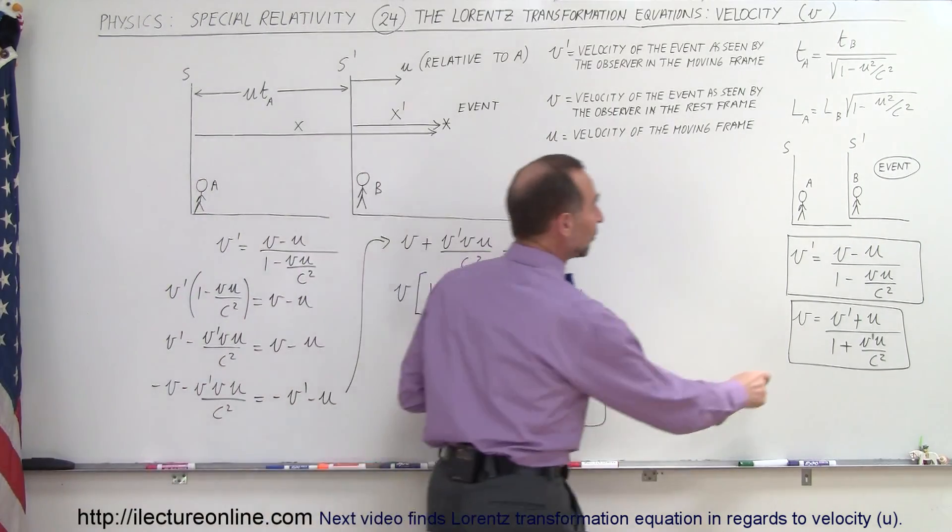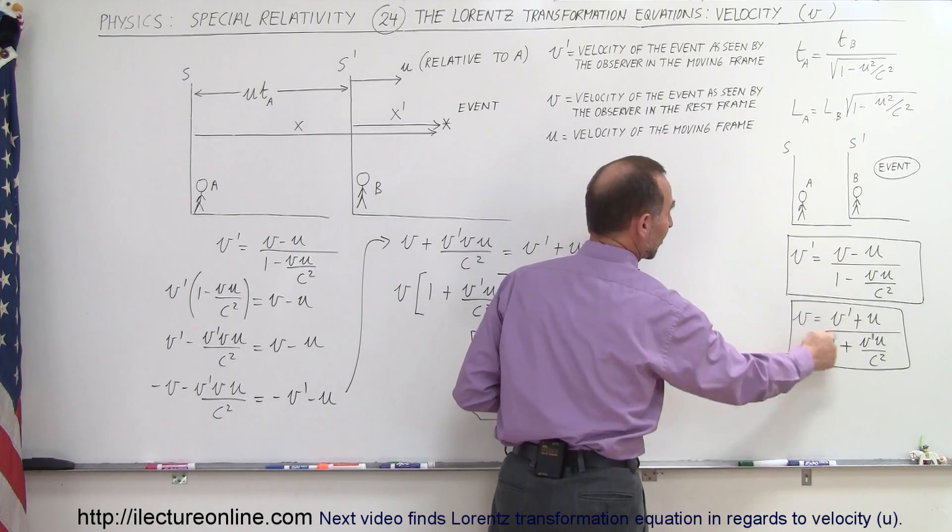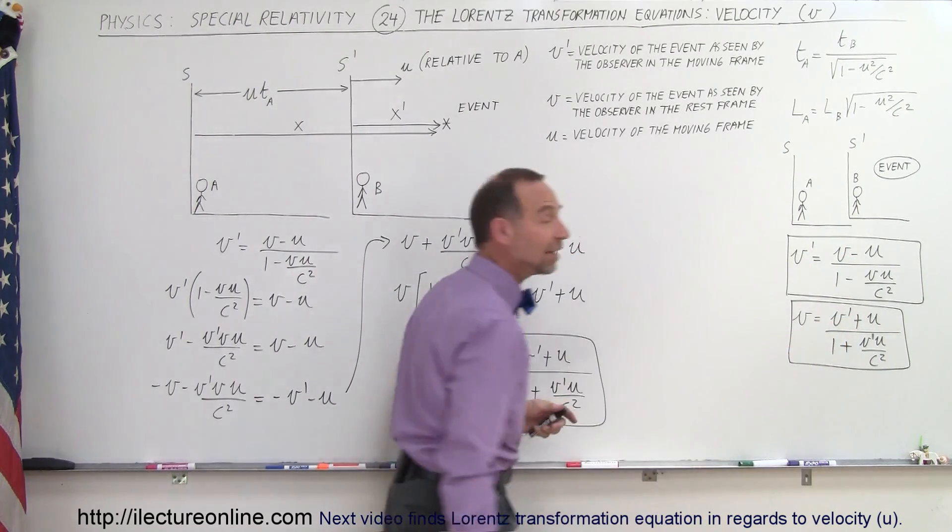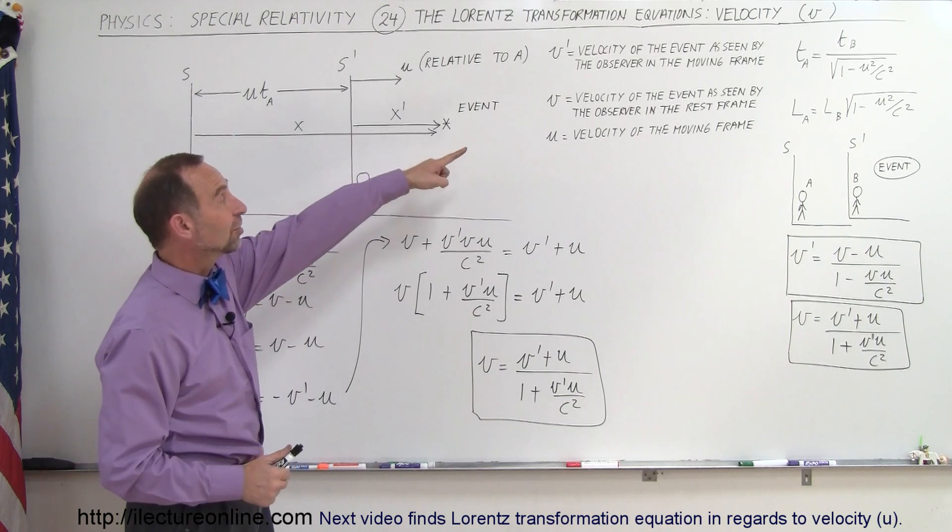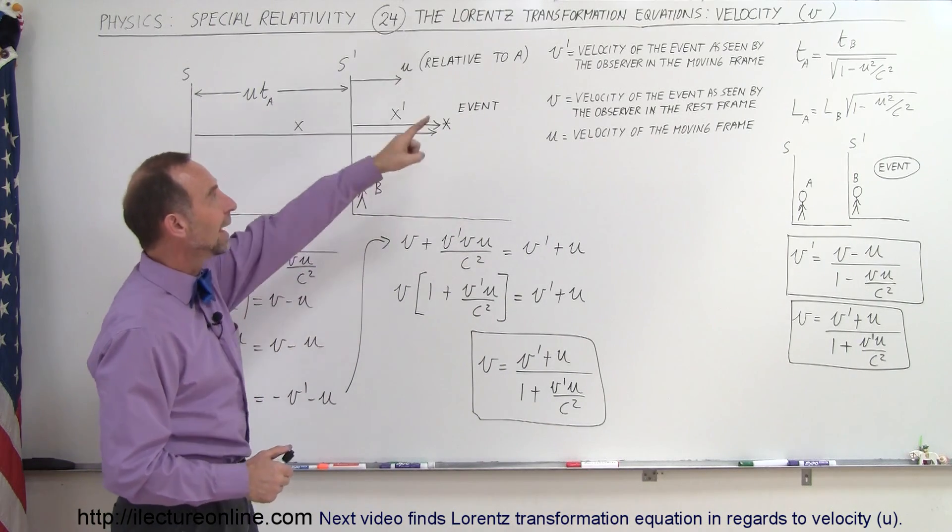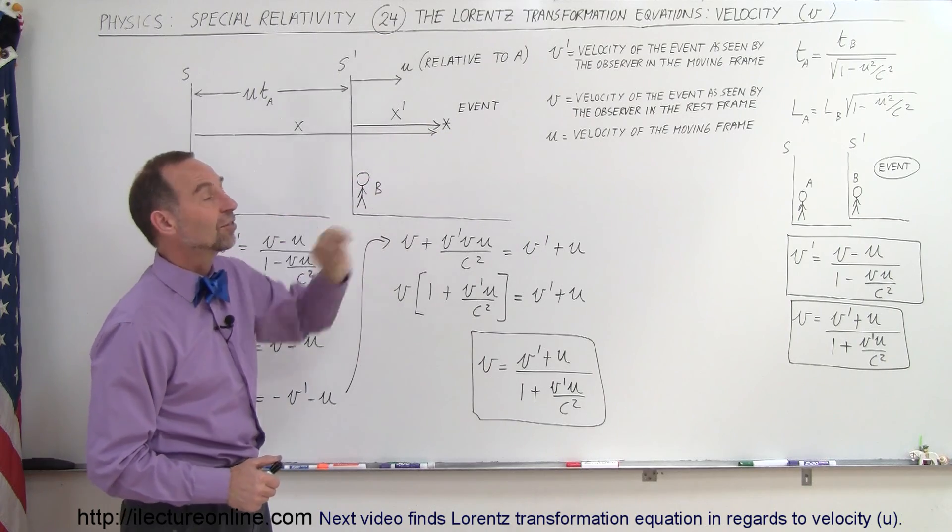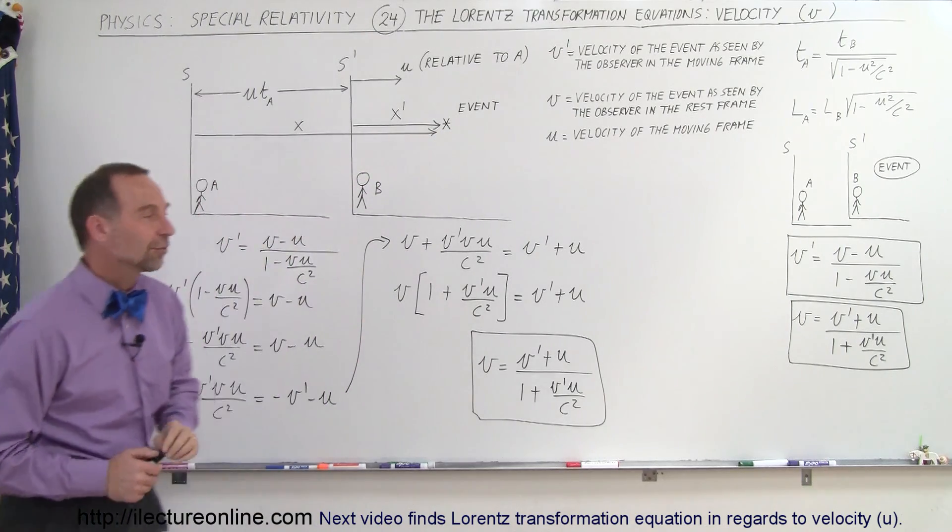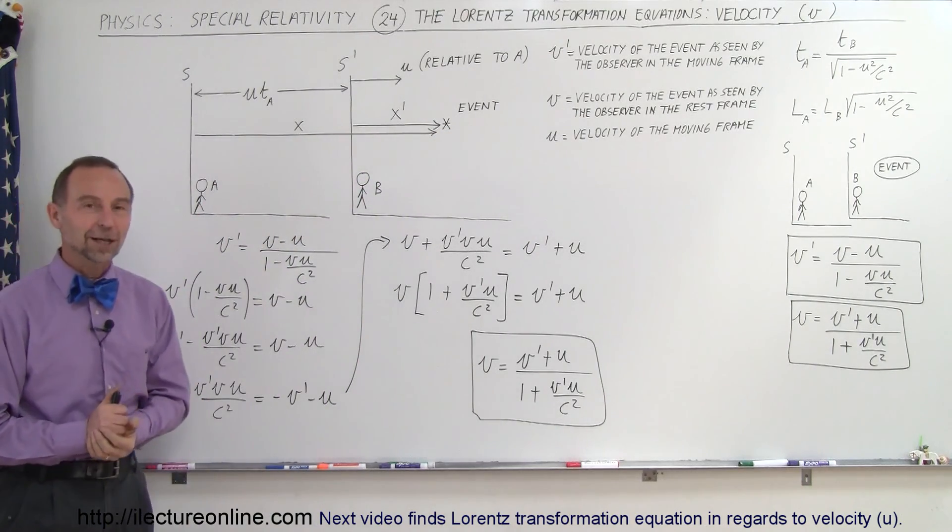So now we're able to go back and forth. If we're given V we can calculate V', and if we're given V' we can calculate V. Remember V by definition is the velocity of the event as seen by the observer in the stationary reference frame, and V' is the velocity of the event as seen by the observer in the moving reference frame. And that's how we do that.